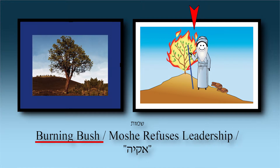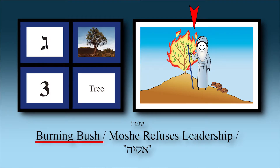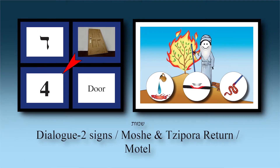Moshe Rabbeinu begins a dialogue that actually lasts seven days and spills into chapter four. In chapter three, Moshe was tending the flocks of Yitro, went far into the Midbar in Midian, arrived at the mountain — currently called Chorev, eventually to be Har Sinai — and there HaKadosh Baruch Hu revealed Himself to Moshe in the Sneh. The dialogue continued for seven days.